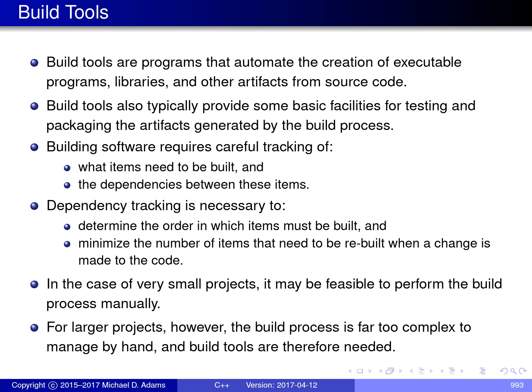In order to build software, we need to carefully track what items need to be built and the dependencies between these items. Dependency tracking is necessary for two reasons. First, we need to know the dependencies between items so that we can determine the order in which the items need to be built. For example, we cannot link the object files for an application program until the object files themselves have first been produced through compilation.